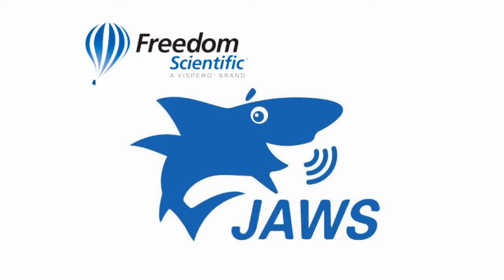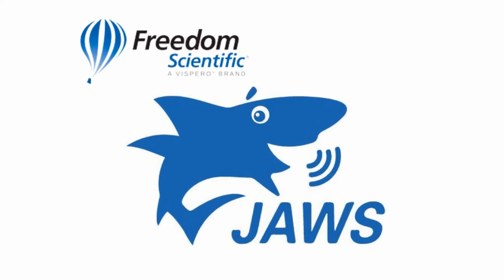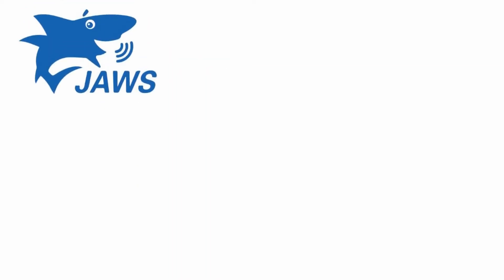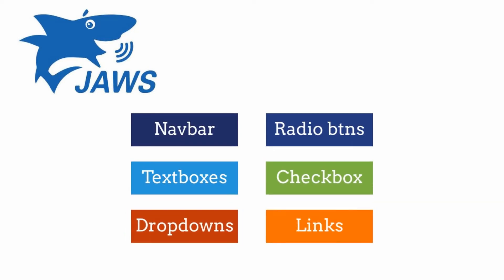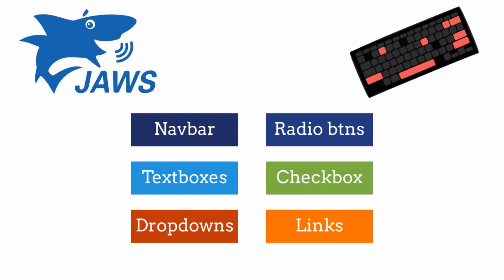I will share the link in the description below. For today's video we will cover the basic HTML form elements such as navbars, text boxes, dropdowns, and so on. One important thing - I will be using keyboard keys only while interacting with the HTML elements, which is what a regular non-sighted user does. Now let's get started.